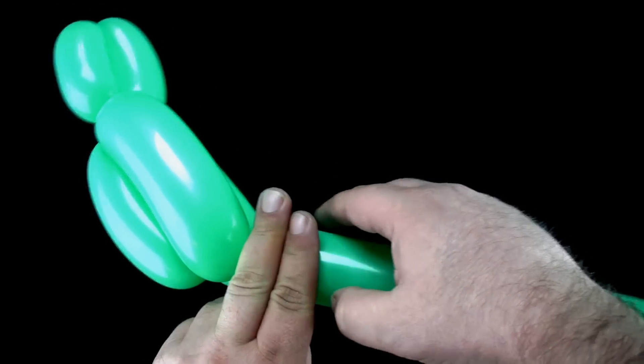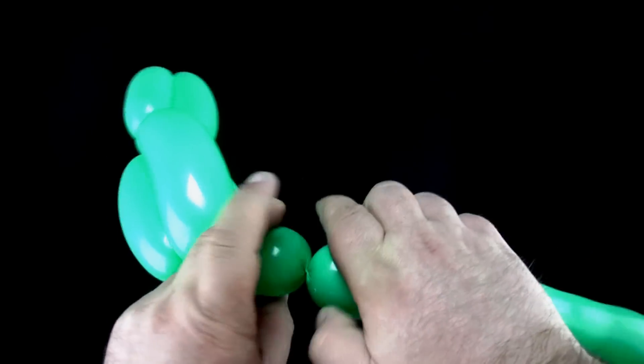Now twist two two finger bubbles and lock twist them to form the parrot's feet.